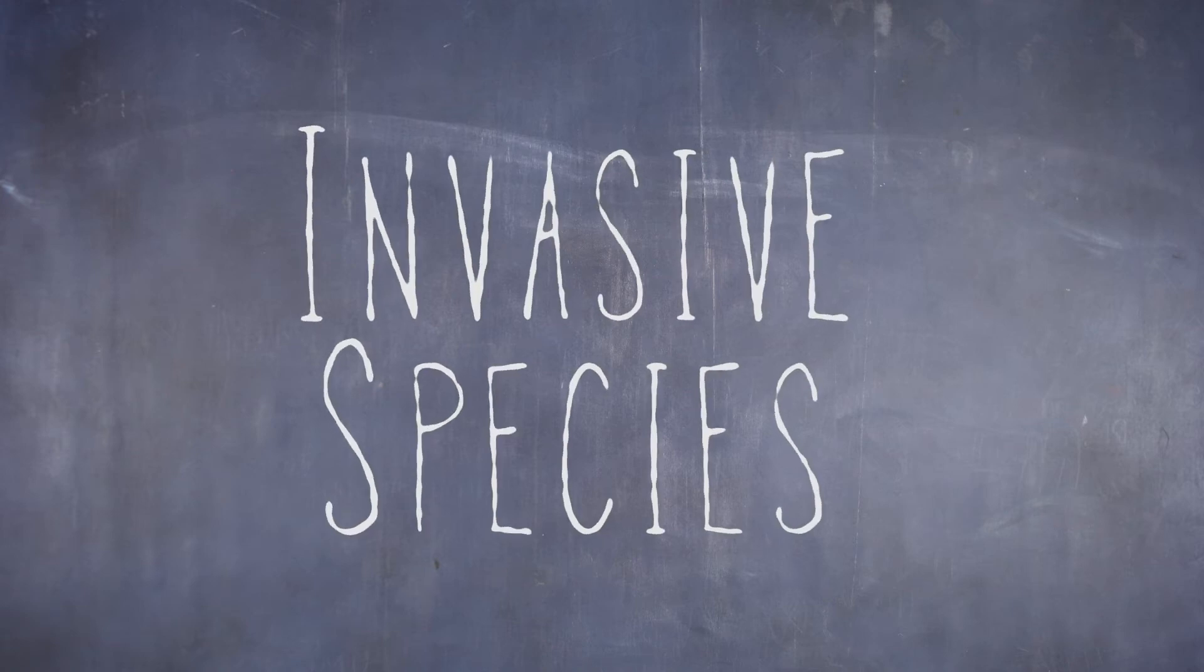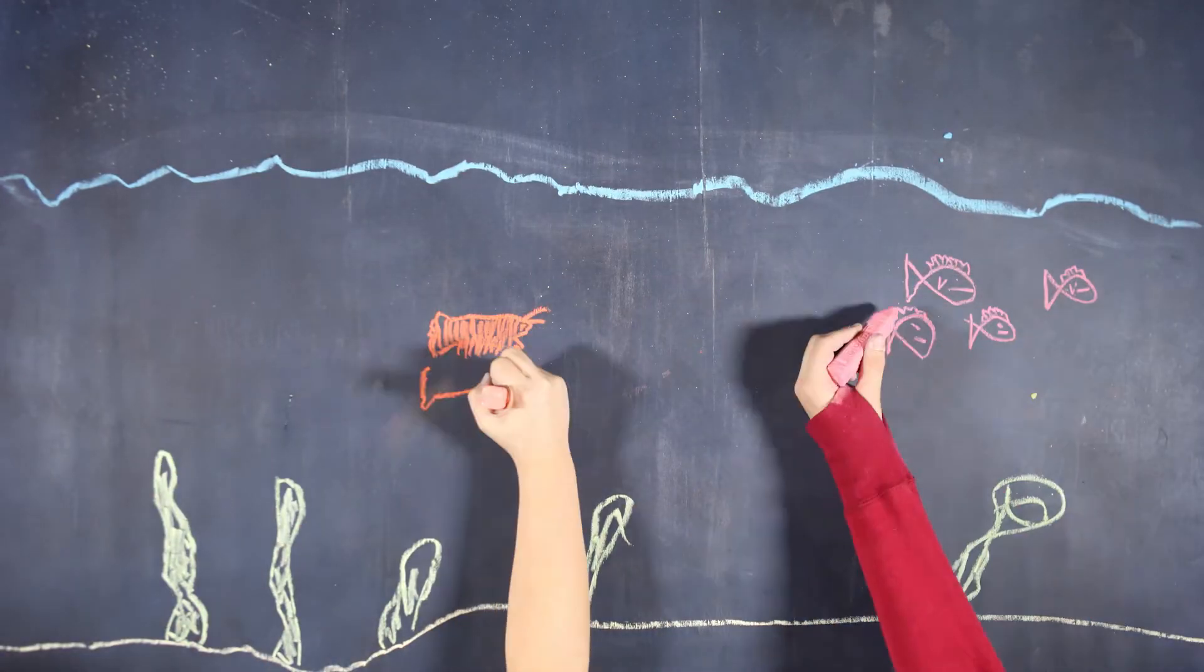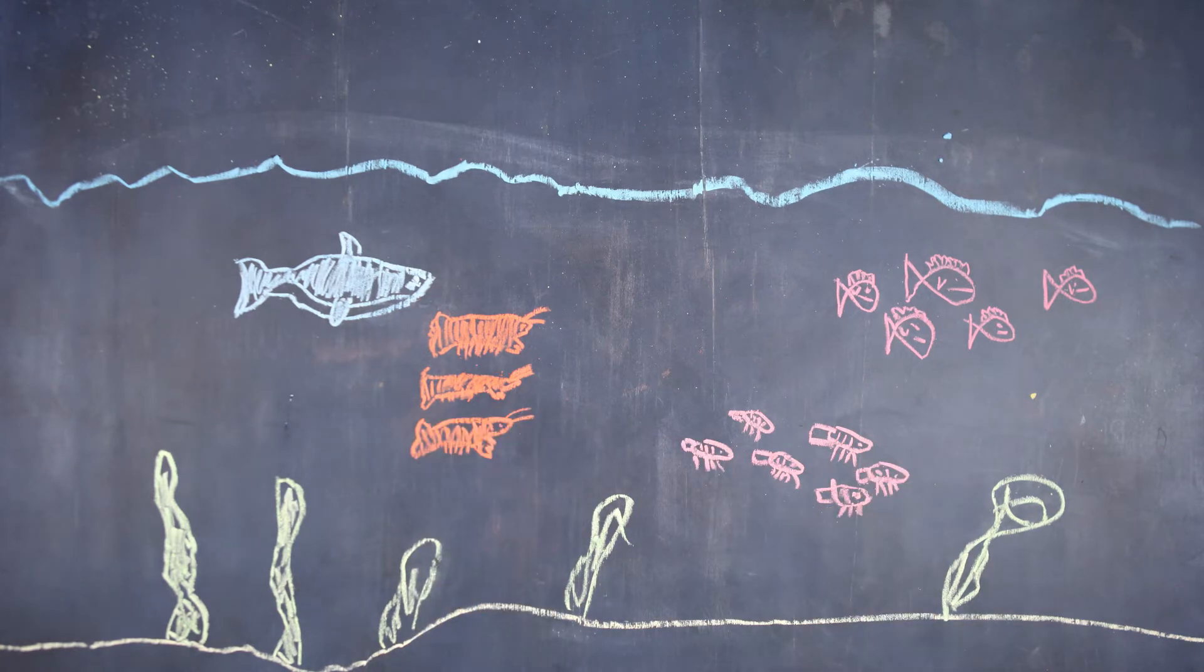Today we are talking about invasive species. Invasive species are species that end up in an ecosystem that they do not belong in.